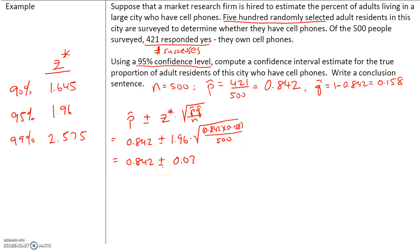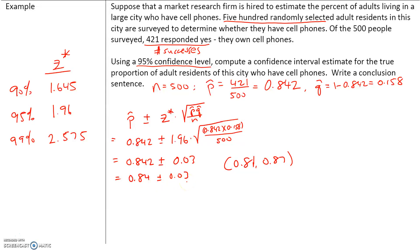We can go with 0.84 plus or minus 0.03. So our confidence interval would be 0.84 minus 0.03, which is 0.81, and 0.84 plus 0.03, which is 0.87. This is our confidence interval, and it represents a 95% confidence level.